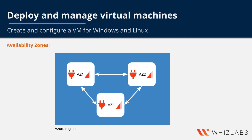With availability zones, you can architect your solutions to replicate your VMs across the zones and you can protect your apps and data from the loss of a single data center. If one zone is compromised, the replicated data and apps are instantly available in another zone.